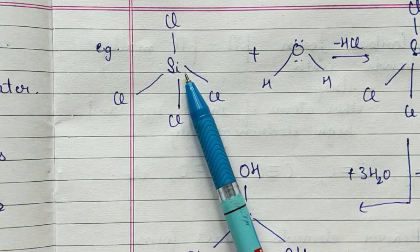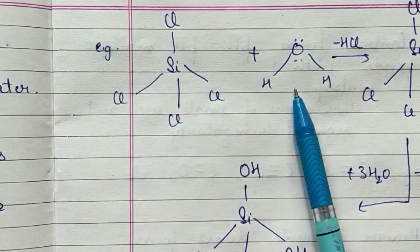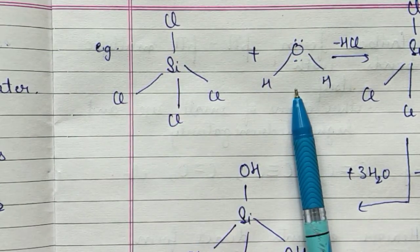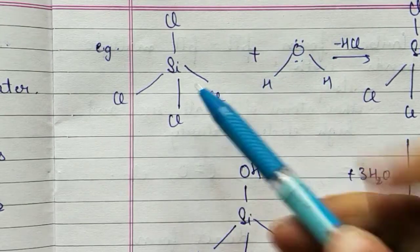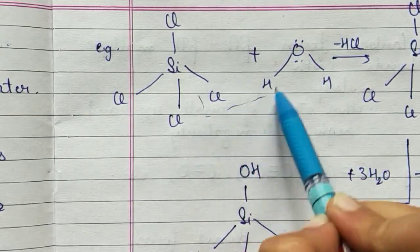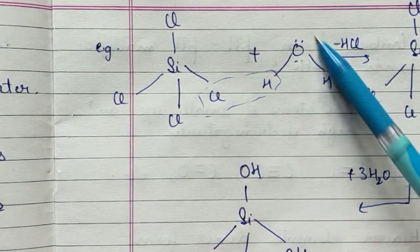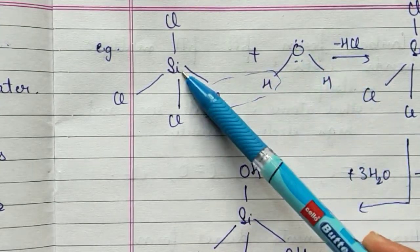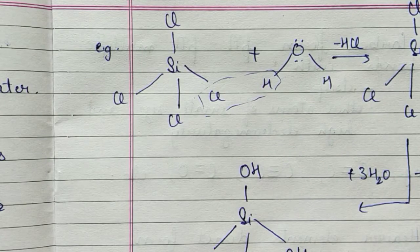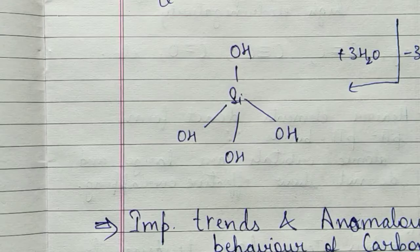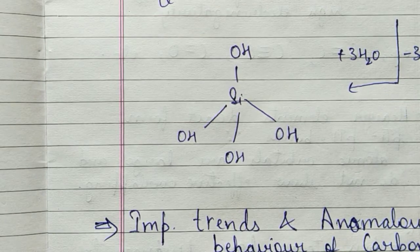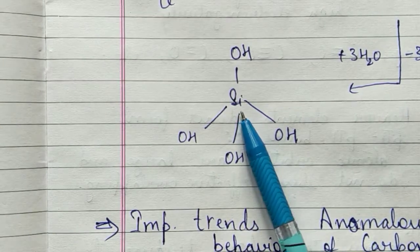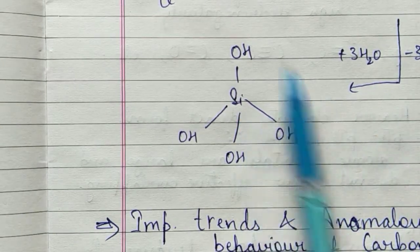In the hydrolysis reaction, silicon tetrachloride reacts with water: one H and one Cl are removed, and an OH group forms a bond in their place. Further reaction with three more water molecules removes the remaining three HCl molecules, replacing all Cl atoms with OH groups.